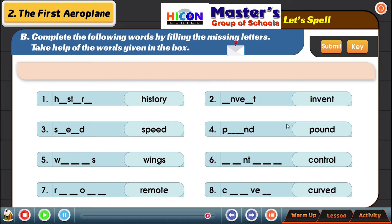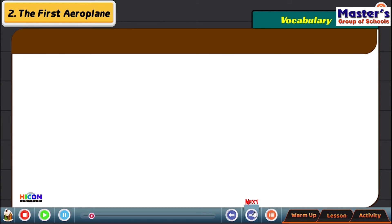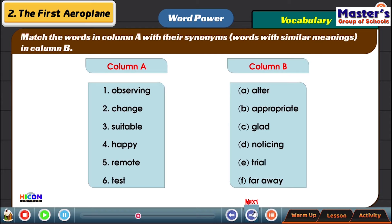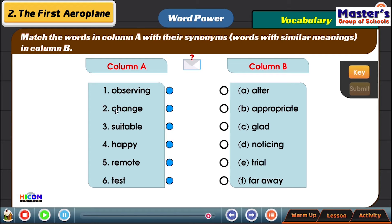Vocabulary word power — match the words in column A with their synonyms, meaning words with similar meanings in column B. We have a set of six words here: observing, change, suitable, happy, remote, test. There are a set of words in column B which have the same meanings: alter, appropriate, glad, noticing, trial, far away.